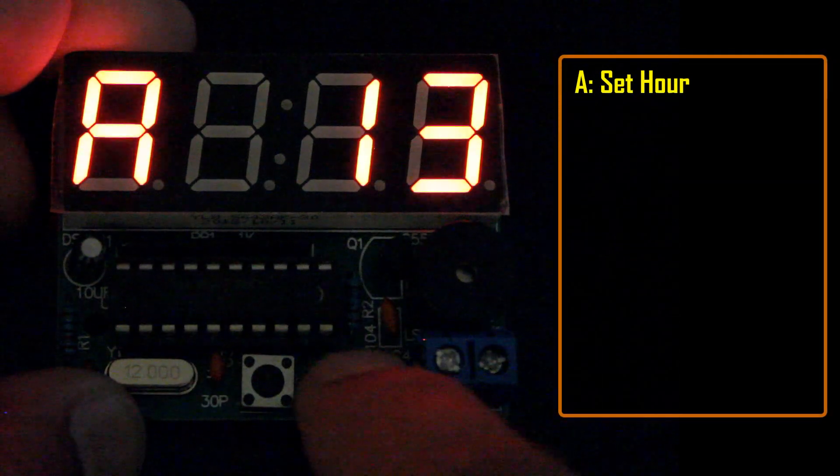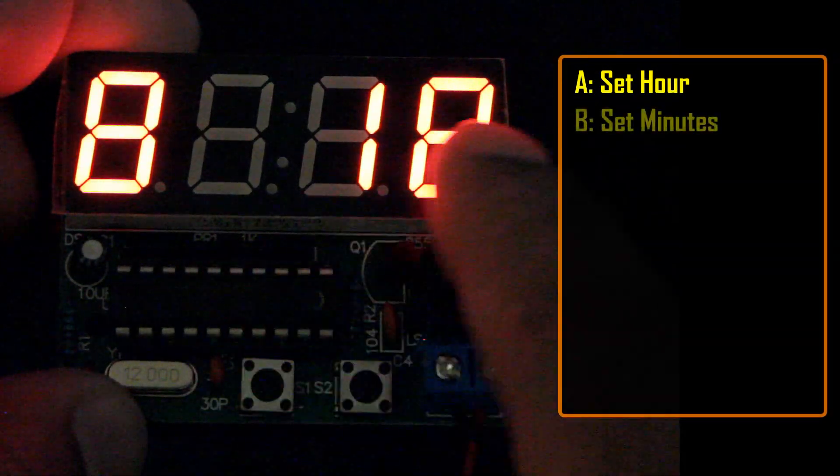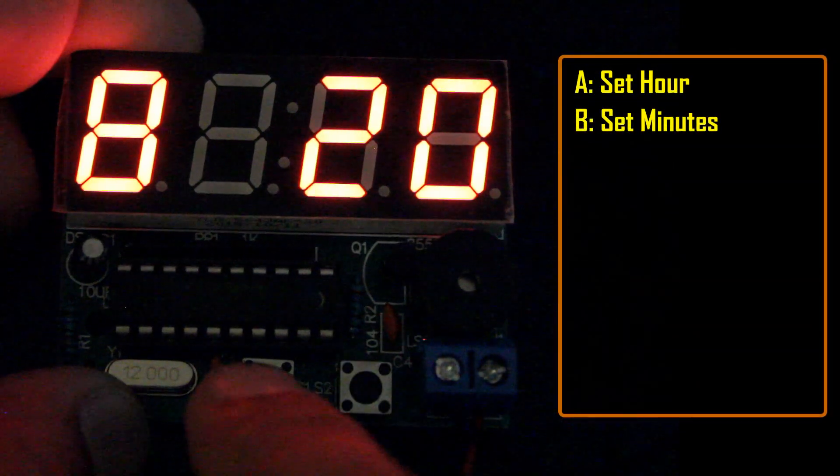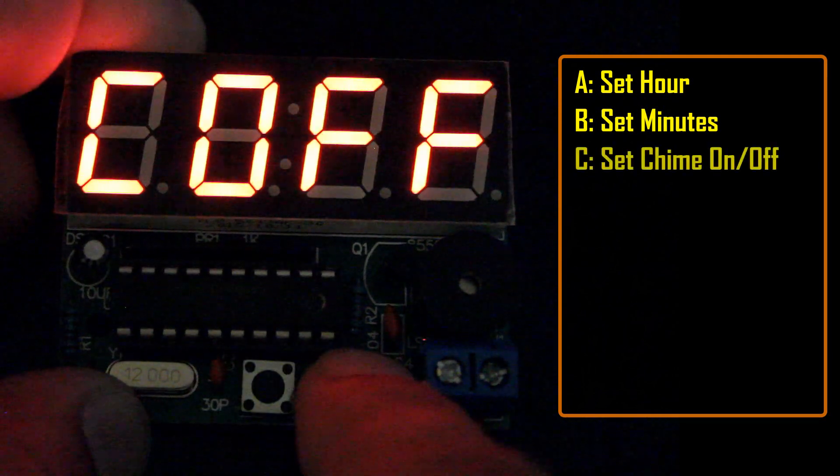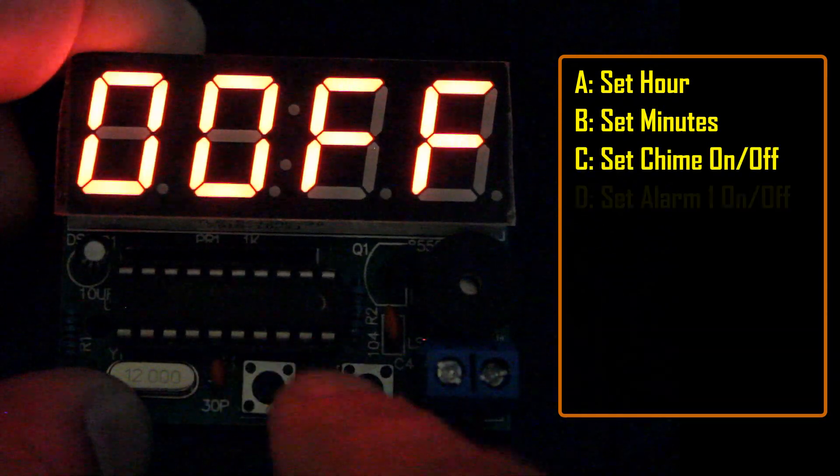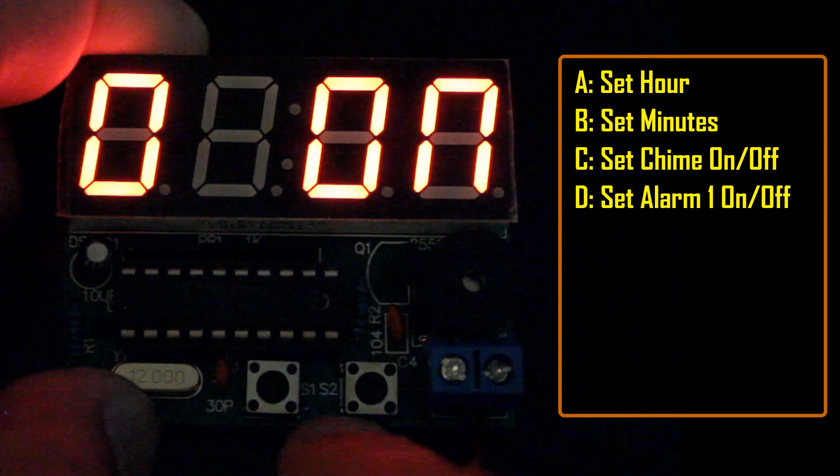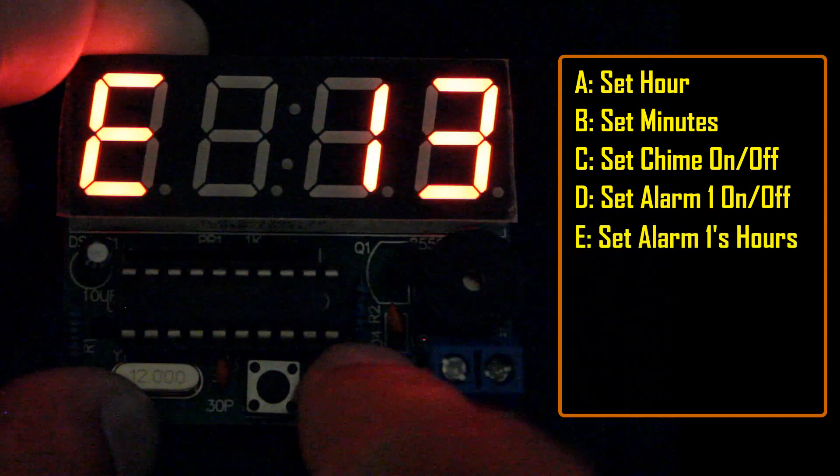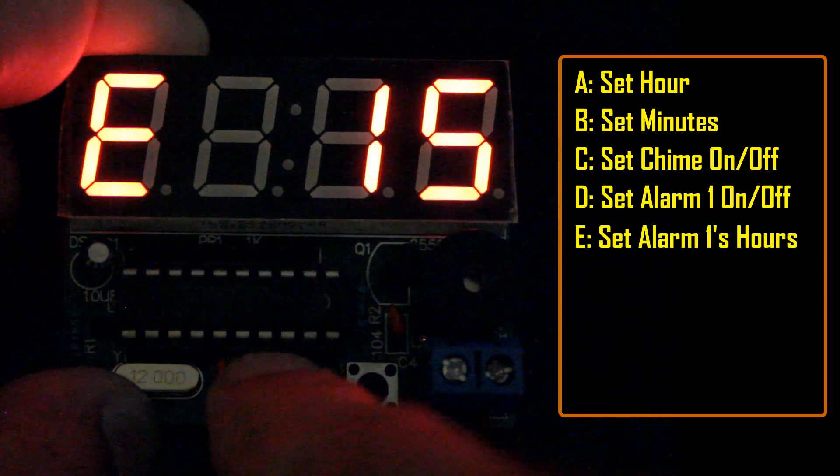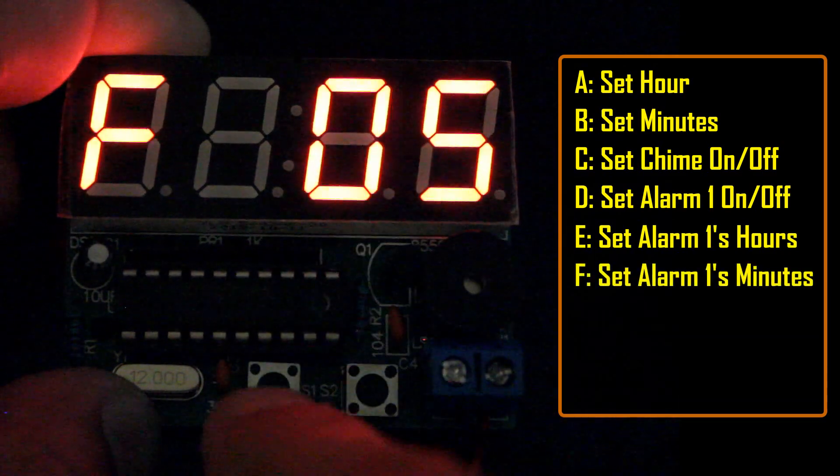Then A is to set the hour. B is to set the minutes. C is to set the chimes on or off. D is to set the first alarm on or off. E is to set the first alarm's hour. And F is to set the first alarm's minute.